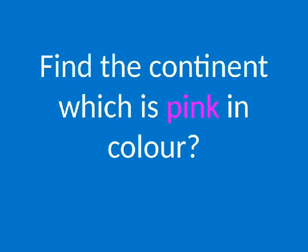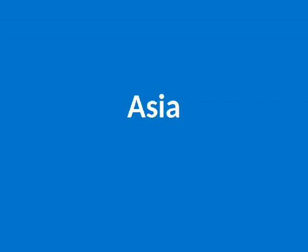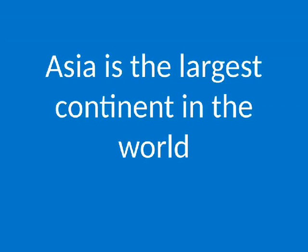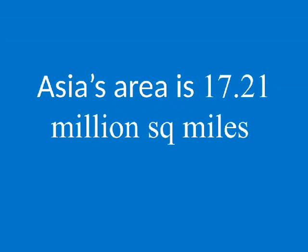Find the continent which is pink in color. Asia. Asia is the largest continent in the world. Asia's population is 4.43 billion. Asia's area is 17.21 million square miles.